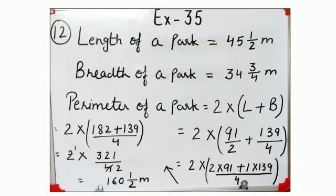Cancel these fractions. 2 into 1 is 2, 2 into 2 is 4. The final fraction is 321 by 2. Convert to mixed numeral: 160 and 1 by 2 meters is the answer.